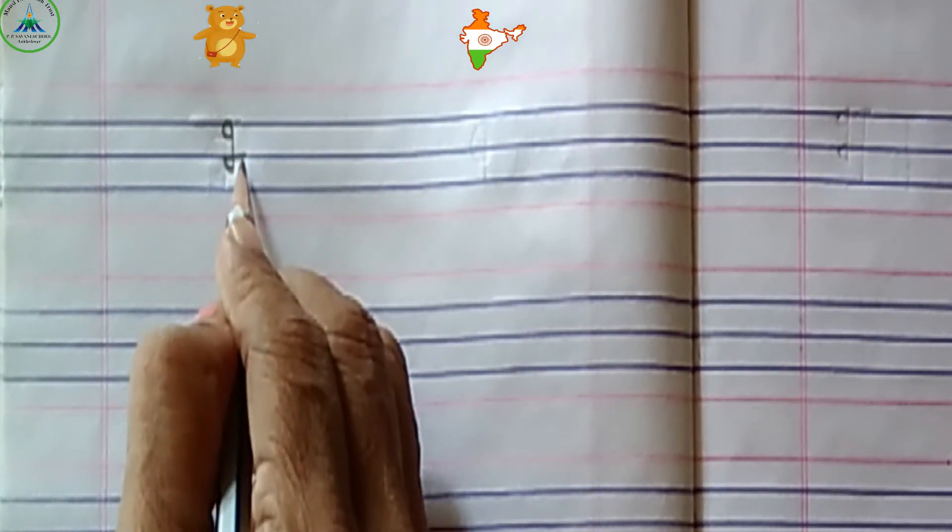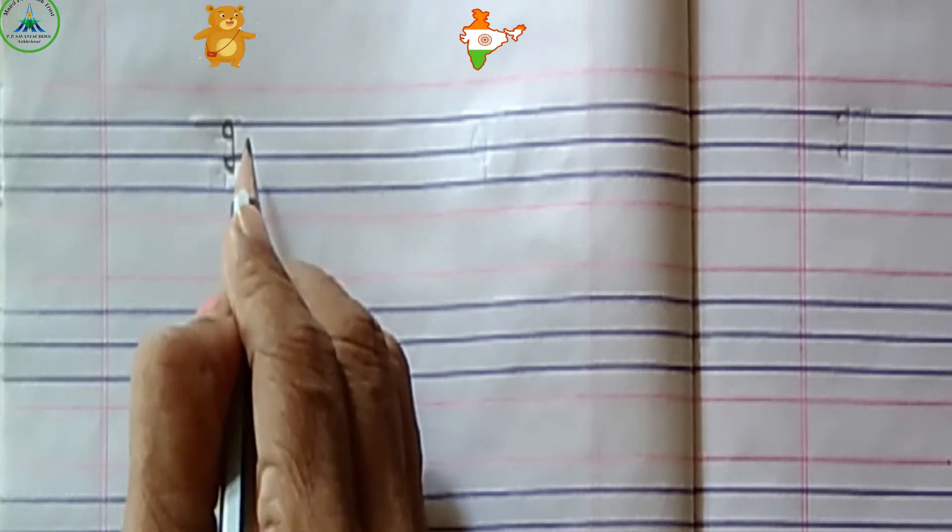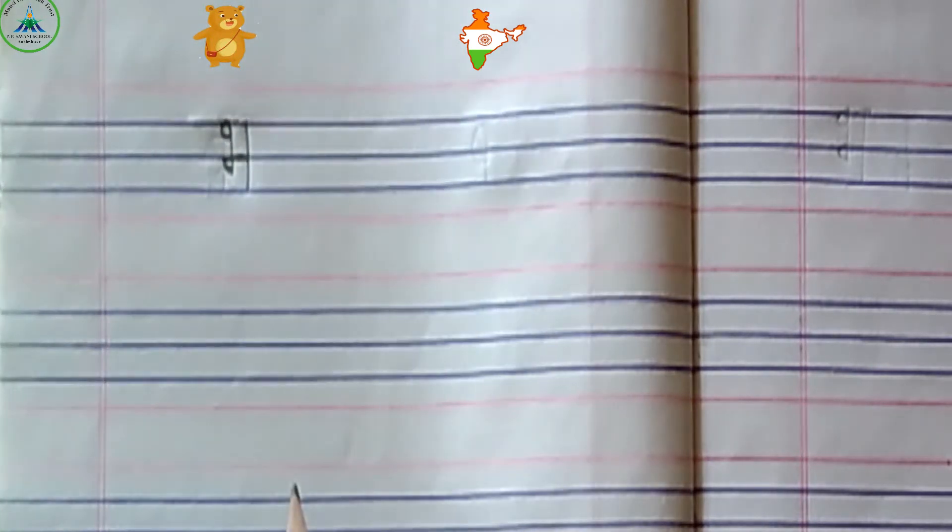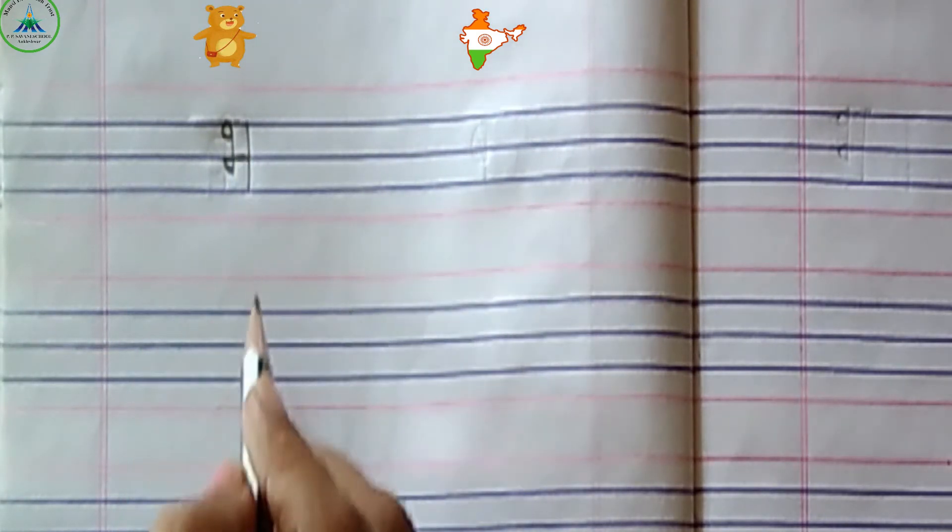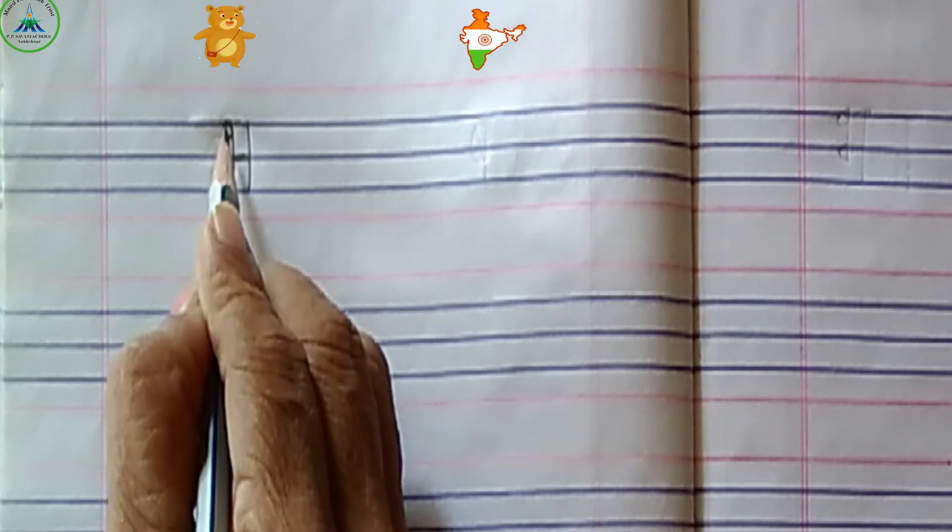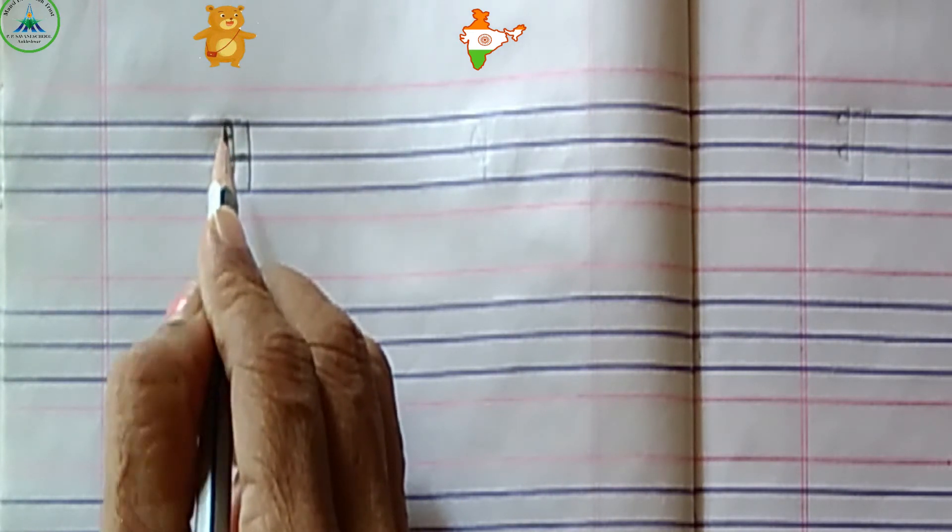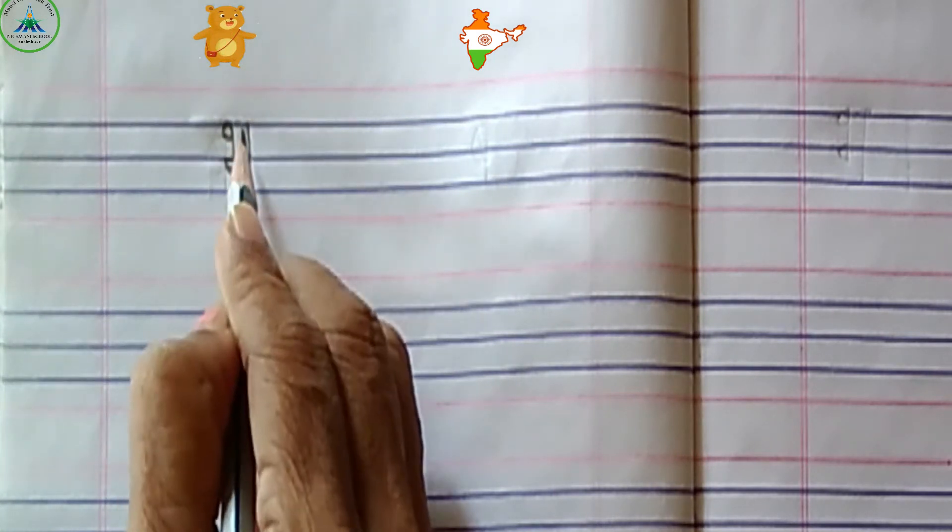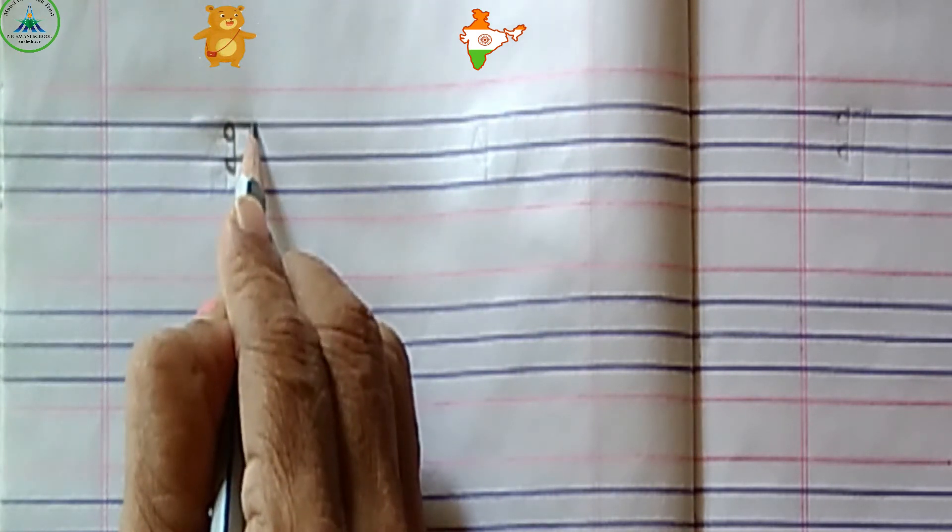Then we will get a standing line which is the sleeping line. Which way? This way. Here we will get a sleeping line which is small. Here we will get a sleeping line.